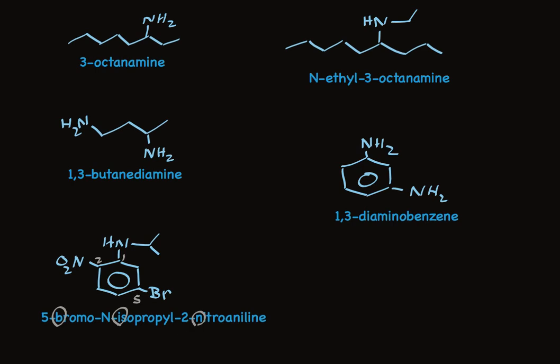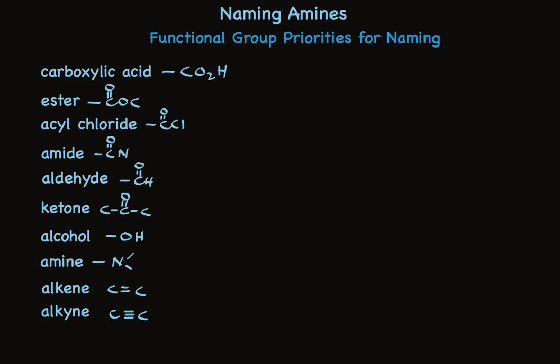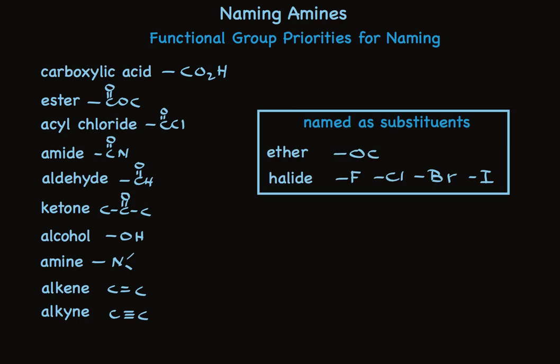This follows the pattern of systematic nomenclature used for other functional groups. The amino group isn't always the highest priority functional group in a molecule — in fact, it's fairly low on the functionality priority list. Carboxylic acid is the highest priority, followed by three carboxylic acid derivatives, then aldehyde, ketone, alcohols, and then amines. The amine functional group is only above alkenes and alkynes. Ethers and halides are named as substituents with no priority ranking. So it's common, when there are multiple functional groups, that the amine is not the highest priority, and we name it as a substituent.